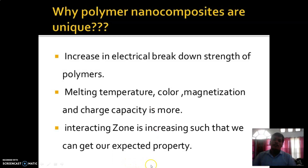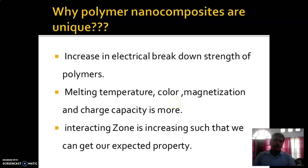Now, why are polymer nanocomposites unique? Because they increase the electrical breakdown strength of polymers. Secondly, the melting temperature, color, magnetization, and heat capacity of polymer nanocomposites are more. Thirdly, the interacting zone is increasing such that we can get our expected properties.